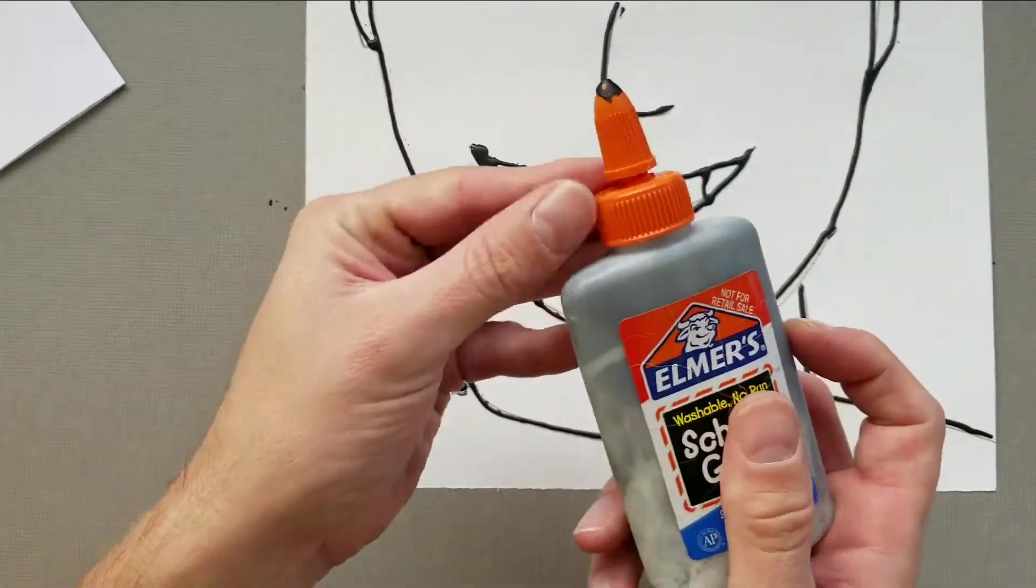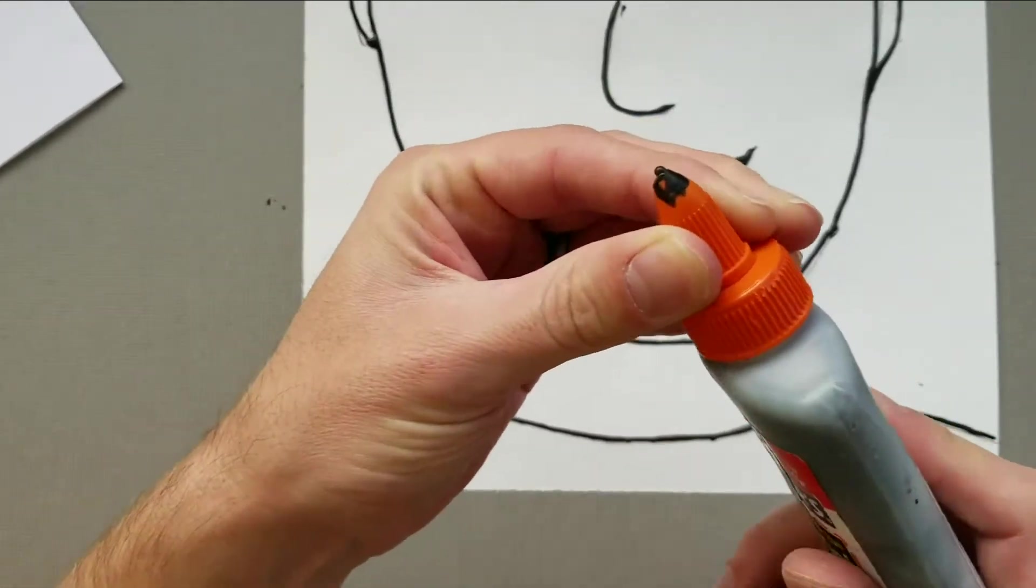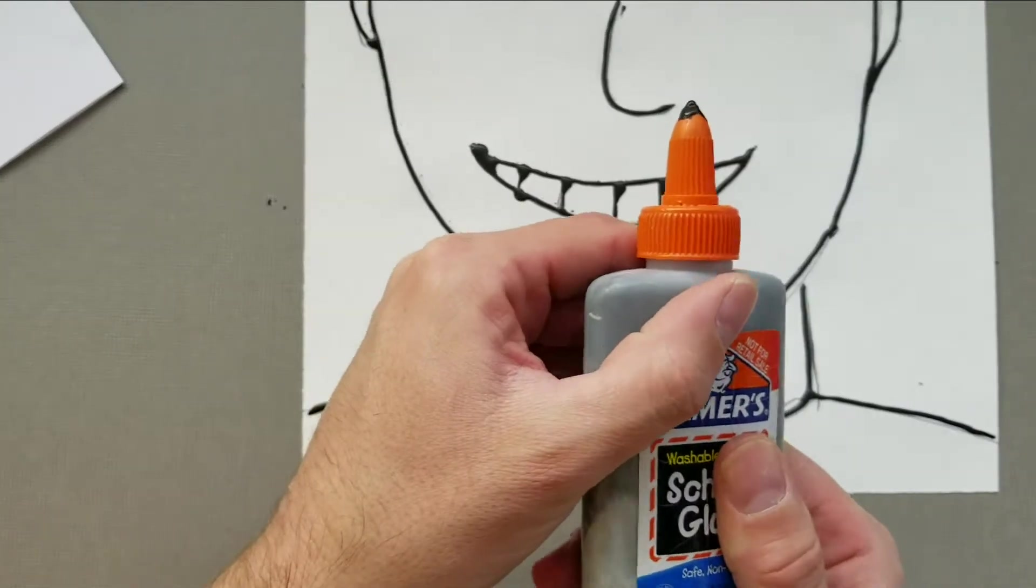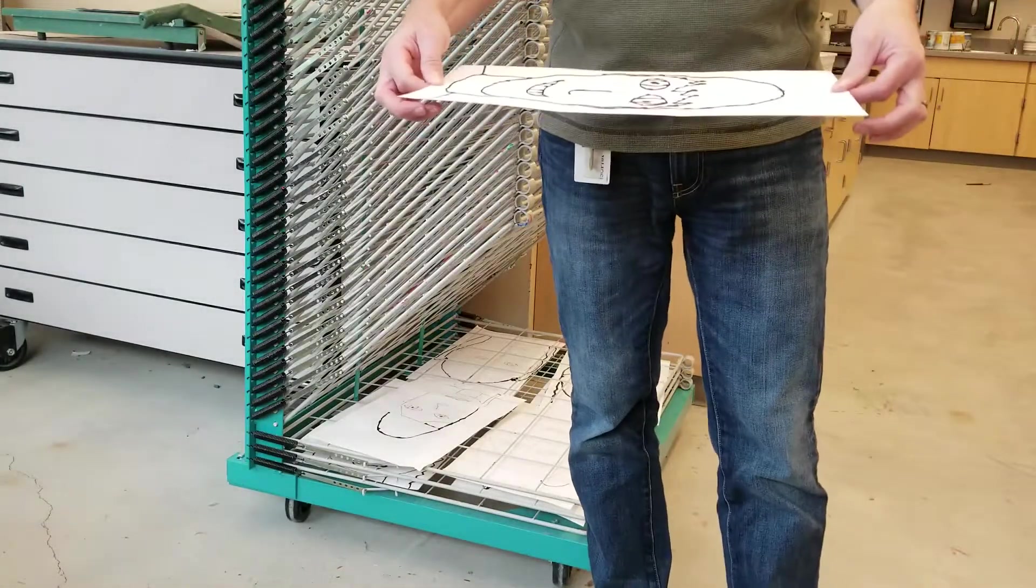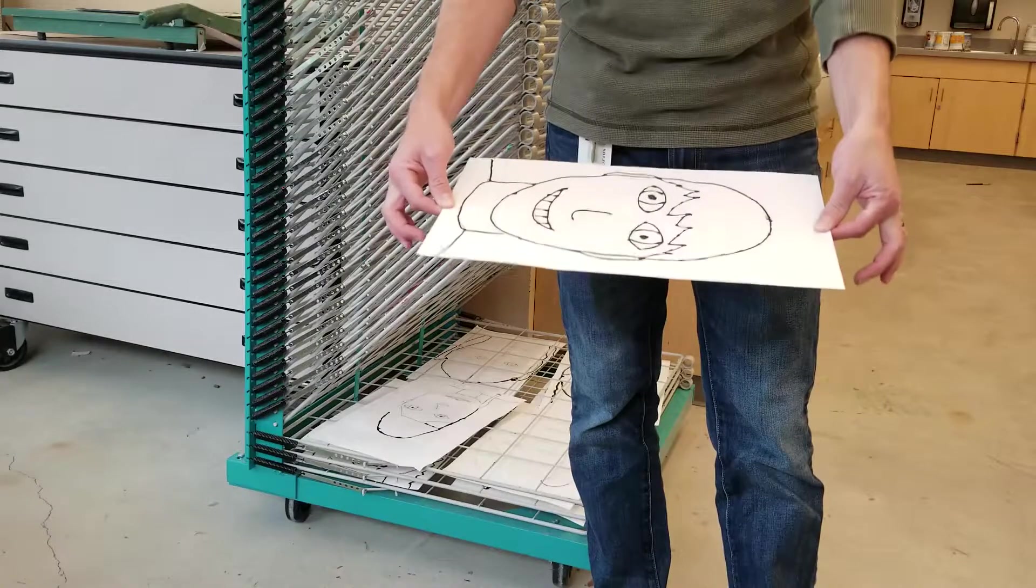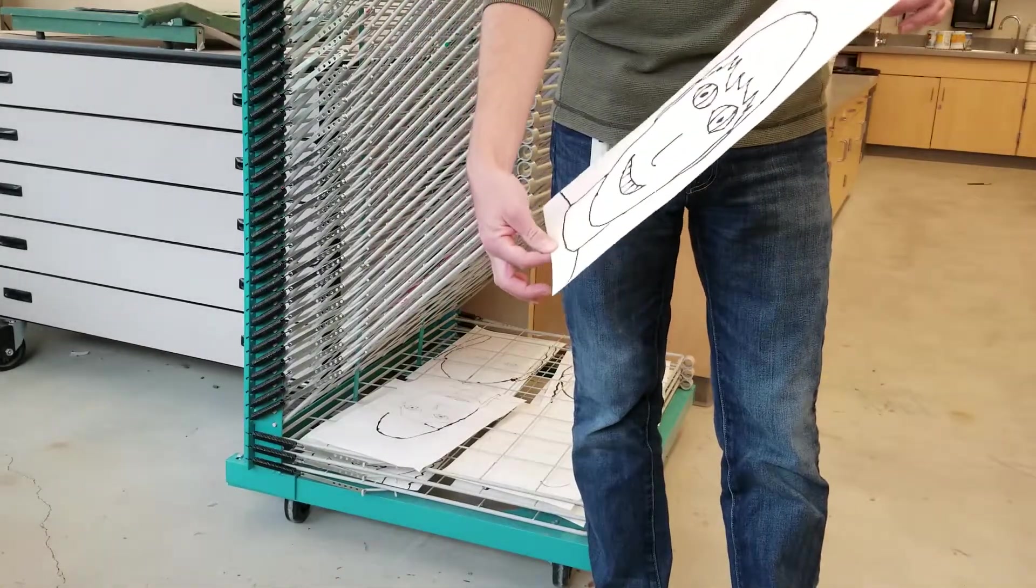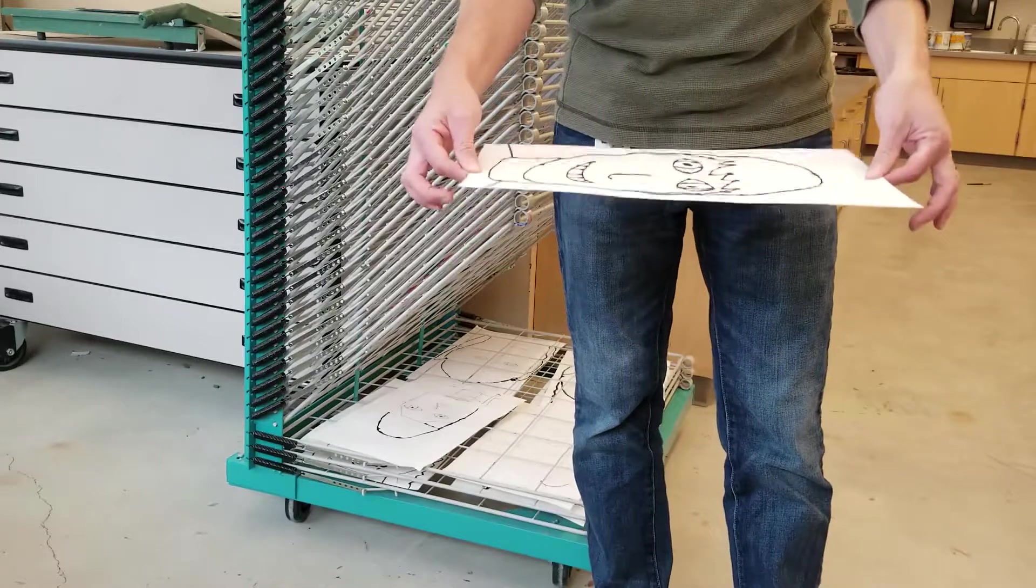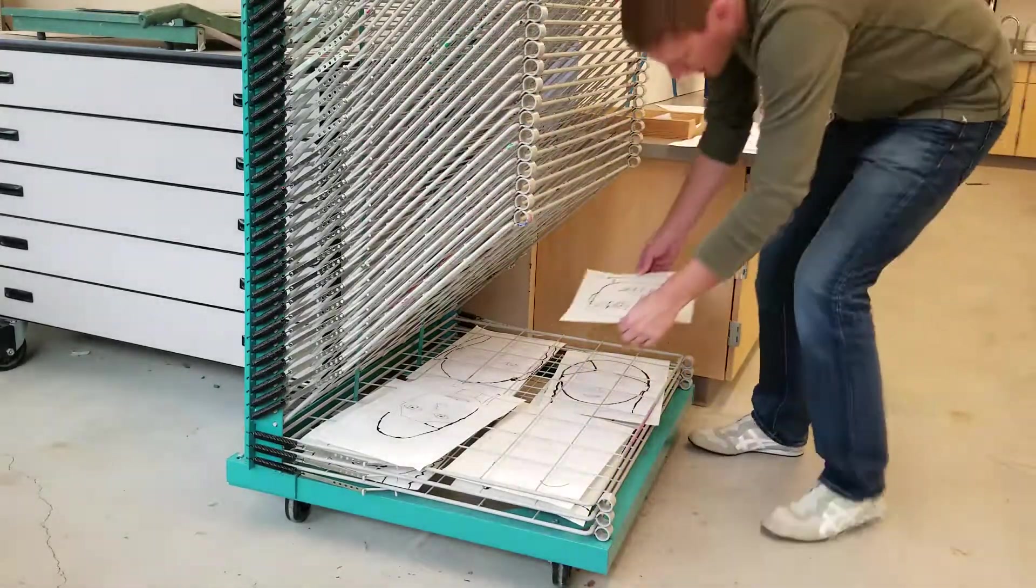When you are finished, please make sure you twist that cap all the way closed - that'll keep it from getting clogged. When you're all finished with your black glue, bring it to the drying rack, but make sure you hold it as flat as you possibly can. If you tip it, that glue is still wet and it can drip. So just two hands all the way over and put it on the drying rack.